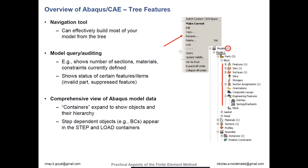You can have multiple models, and within each model the entire model tree can fall under it. There's a navigation tool that can be used to help you build most of the model. There's a model query option that could allow you to look at your different section assignments, material properties, constraints — everything currently defined. There's also a comprehensive view of an Abaqus model using containers that allow you to expand and show objects and their hierarchy. It depends on which way you want to view it — it really is a personal preference.